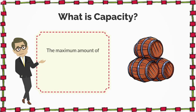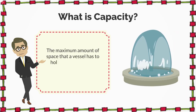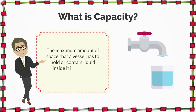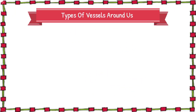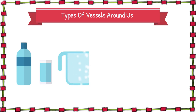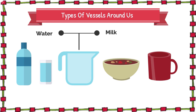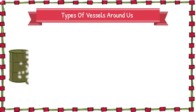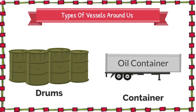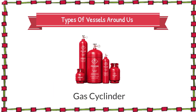The maximum amount of space that a vessel has to hold or contain liquid inside it is called its capacity. There are different vessels around us such as a bottle, a glass, and a jug, which are used to hold water and milk. A bowl is used for containing soup, a cup is for holding tea or coffee, drums and similar containers hold and carry oils, and gas cylinders hold liquid gas as fuel.